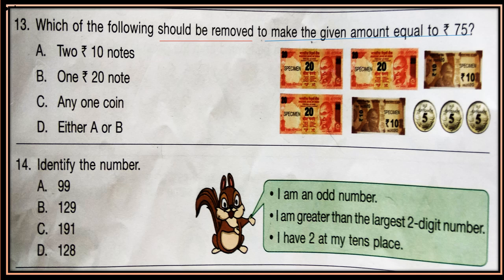Question 14. Identify the number. I am an odd number. I am greater than the largest two-digit number. I have two at my tens place. Now see the options carefully. First, choose which is an odd number. Then choose the number which is greater than the largest two-digit number. And then look which number has two at the tens place.